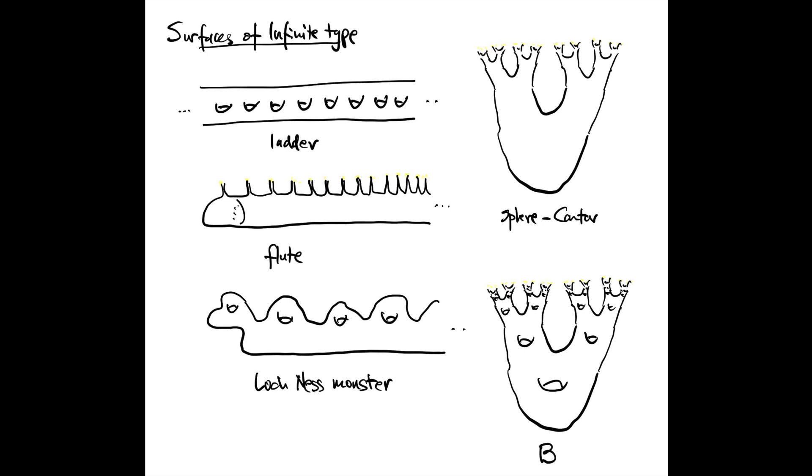Here are some examples of surfaces of infinite type. The ladder has infinite genus and two ends and looks like an infinite cyclic cover of a genus 2 closed surface. The flute surface has genus 0 and countably many ends converging to a single accumulation point at infinity. It looks like the plane minus the integers.